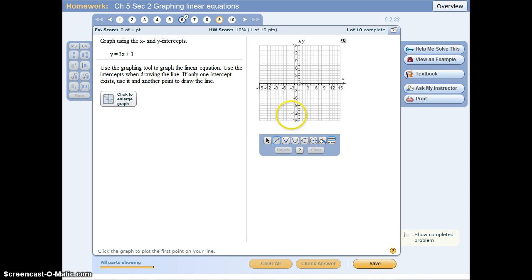I press my line tool. My x-intercept is at negative 1 and my y-intercept is at positive 3, and I press check answer and I get a correct answer.